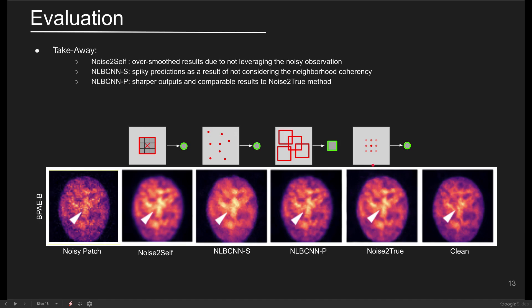Lastly, in noise-to-true, the noisy pixel is directly mapped to the clean counterpart, which explains its superior performance against unsupervised approaches.